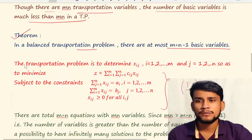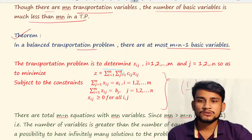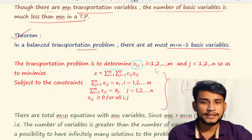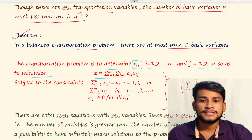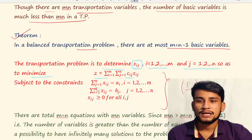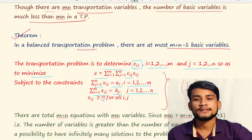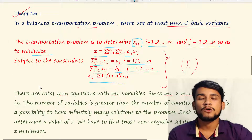The summation form of the transportation problem is: determine x_ij for i = 1 to m, j = 1 to n, so as to minimize Z = ΣΣ c_ij x_ij. Subject to: Σ_j x_ij = a_i for i = 1 to m (supply constraints), and Σ_i x_ij = b_j for j = 1 to n (demand constraints), where x_ij ≥ 0 for all i, j.